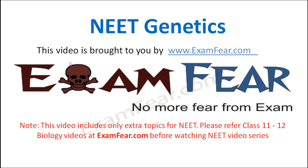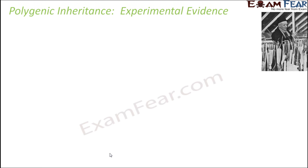Hello friends, this video on Neat Genetics is brought to you by examfear.com — no more fear from exam. Now the question is, when polygenic inheritance was first talked about, Mendel had performed his experiments and given the principles of inheritance, also known as Mendelian inheritance. So later, people came up with the concept of polygenic inheritance. How did they experimentally prove it? How did they give experimental evidence?